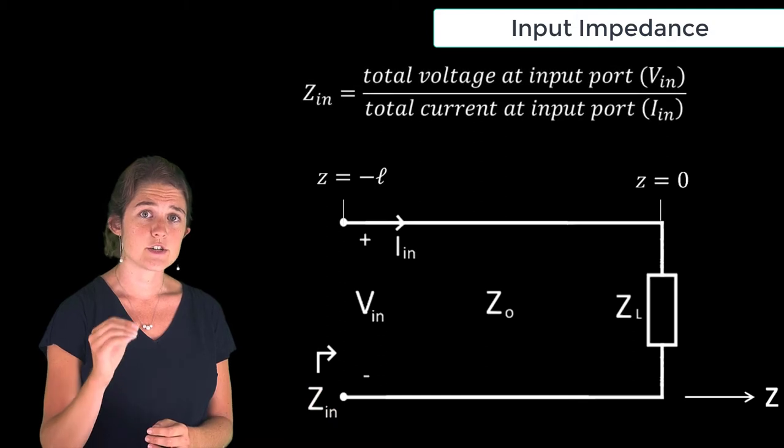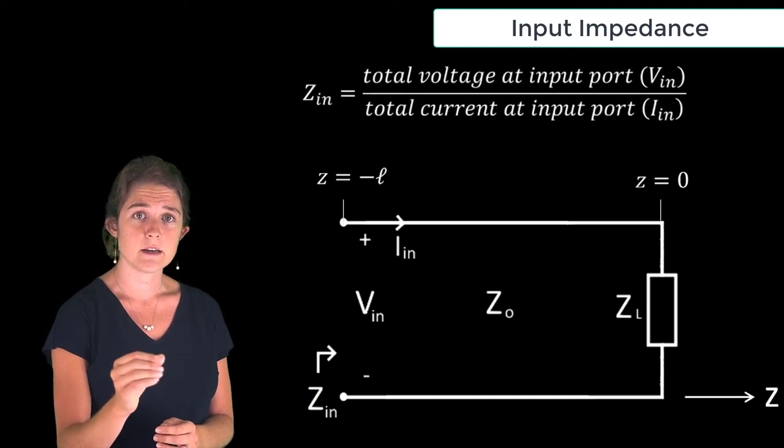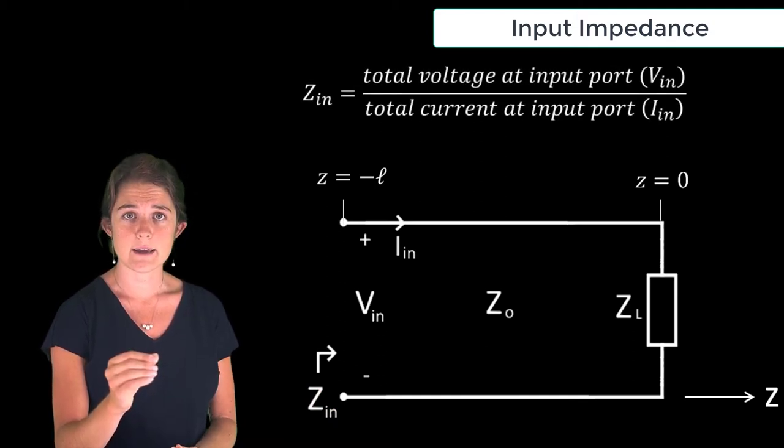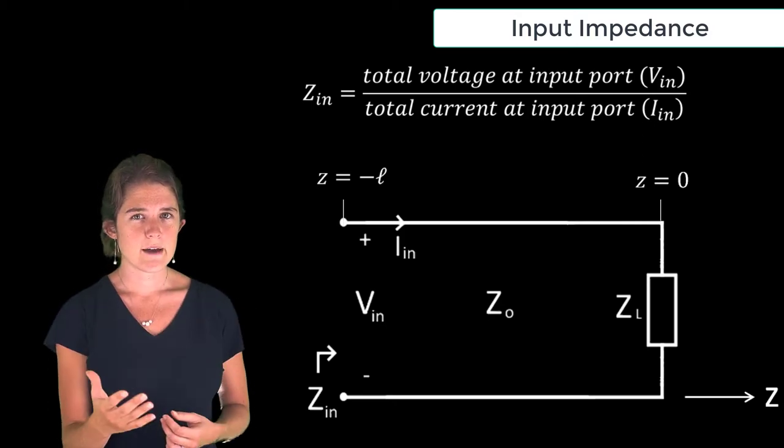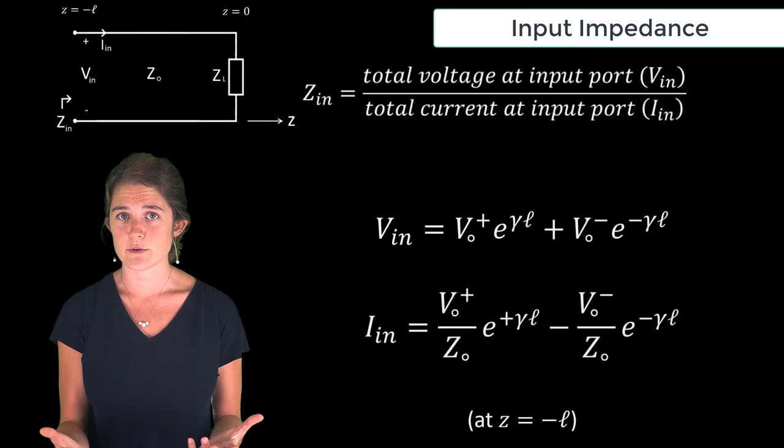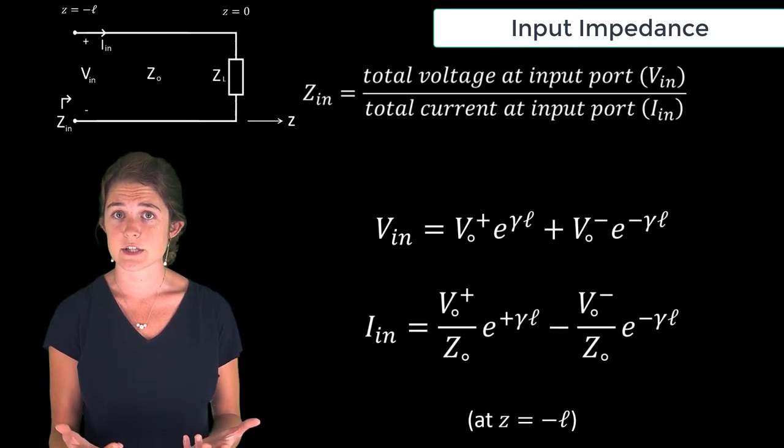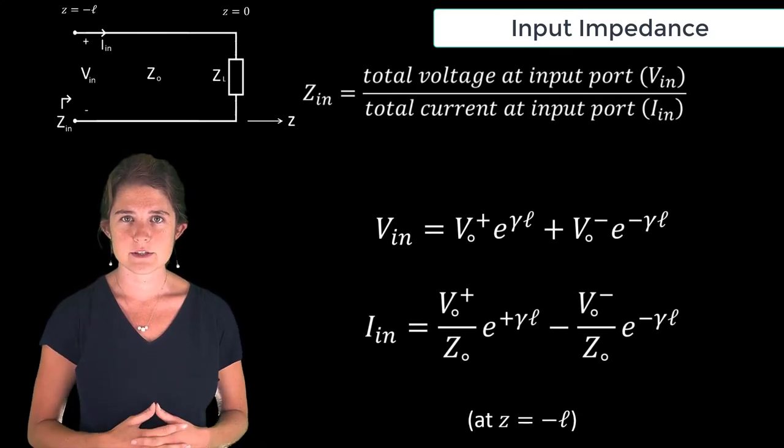Input impedance is the ratio of total voltage VN to total current IN seen at the input port. We have equations for total voltage and total current at a given location along a transmission line which we can use as a starting place.